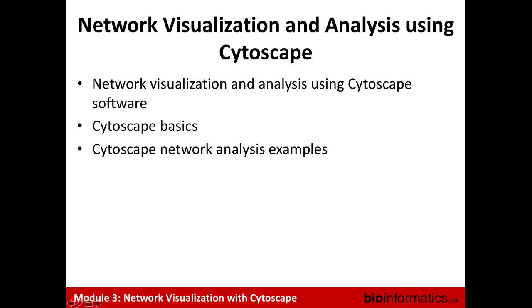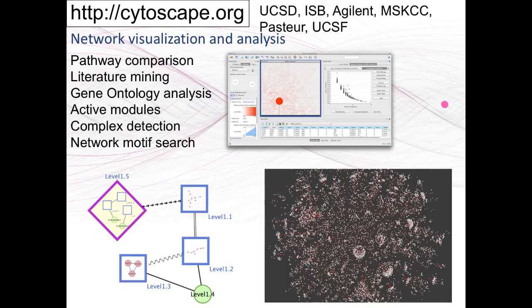The next topic is network visualization and analysis using Cytoscape. Cytoscape is a freely available network visualization and analysis tool developed by a collaboration of a number of different groups — our lab is one of them, with two full-time software developers working on it, and there are about 10 or 12 globally. It provides basic functionality for visualizing networks, and then you can extend the functionality by downloading apps. The basic functionality allows you to visualize, manipulate, query, and lay out networks, and you can also do database searching.